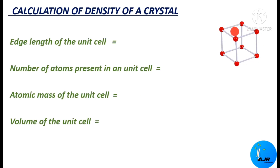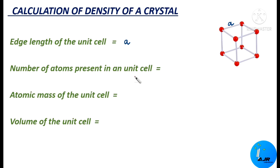This is a unit cell. This crystal will be having a number of unit cells and we are going to find out the formula to calculate the density of a crystal. Let us consider the edge length of the unit cell as A. Now the number of atoms present in a unit cell — there are different types of unit cells: face-centered cubic, body-centered cubic, and simple cubic. Depending upon the unit cell, the number of atoms will be varying. So we are going to find out the general formula to calculate the density of a crystal. In general, we can have the number of atoms present in a unit cell as Z.